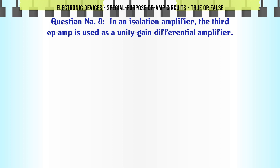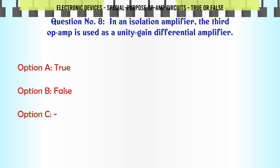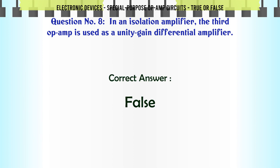In an isolation amplifier, the third op-amp is used as a unity gain differential amplifier. A. True. B. False. C. D. The correct answer is False.